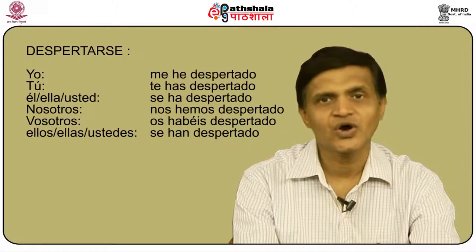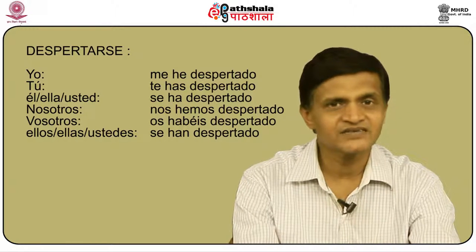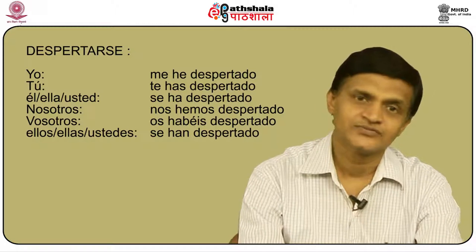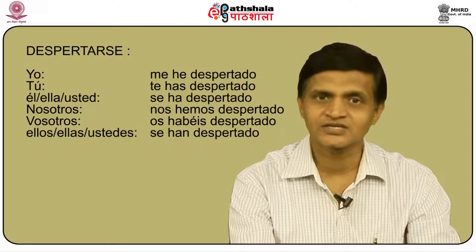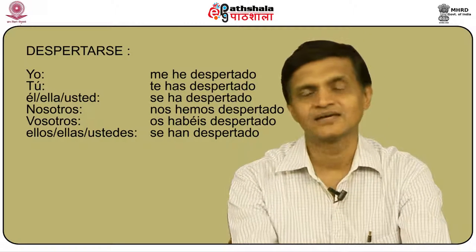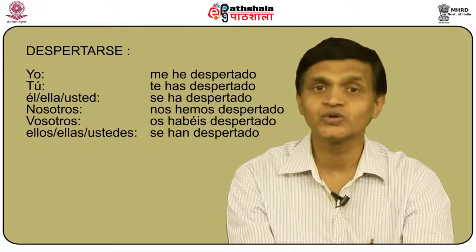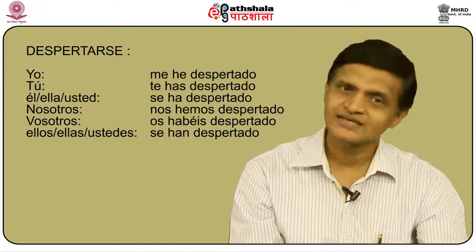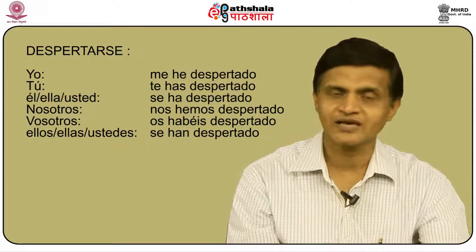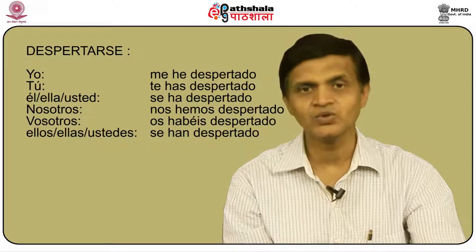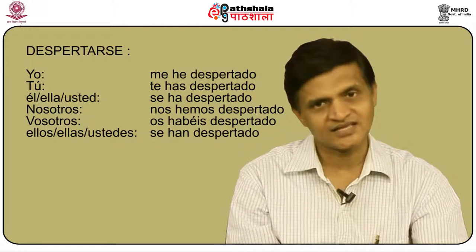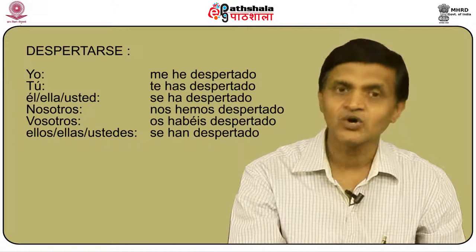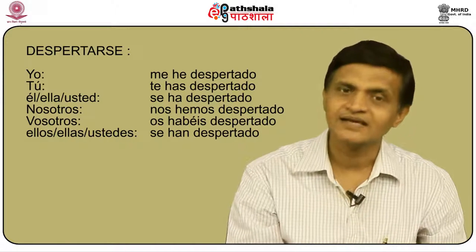How do we conjugate a reflexive verb in the present perfect? The reflexive pronouns me, te, se, nos, os, se come before the auxiliary verb. For despertarse: yo me he despertado, tú te has despertado, él/ella/usted se ha despertado, nosotros nos hemos despertado, vosotros os habéis despertado, and ellos/ellas/ustedes se han despertado. I repeat: me he despertado, te has despertado, se ha despertado, nos hemos despertado, os habéis despertado, and se han despertado.